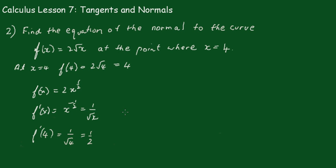Now, so we know that the gradient of the tangent is a half, therefore the gradient of the tangent is equal to 1/2. Therefore, the gradient of the normal must be equal to negative 2. So we've got the point and we've got the gradient.